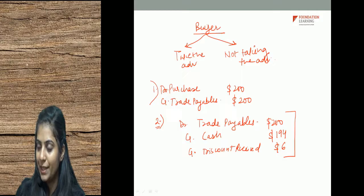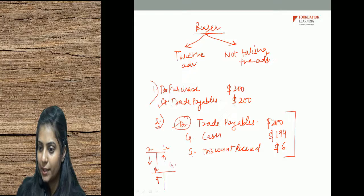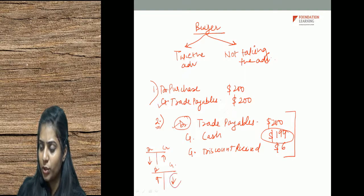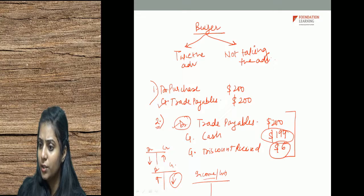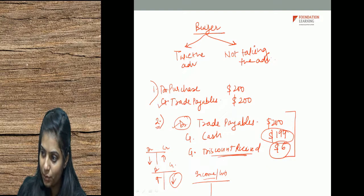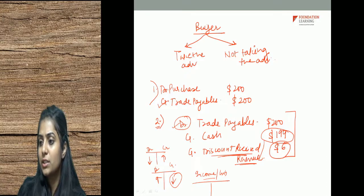When I am taking the advantage of the 3% discount: I pay less cash. Entry: debit trade payables $200, credit cash $194, and credit discount received $6. Trade payables were previously credited; now they decrease so they are debited. Cash is going out of business so it is credited. Discount received is an income — a gain — so it is credited.